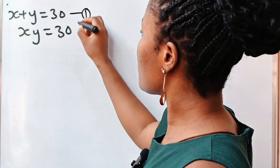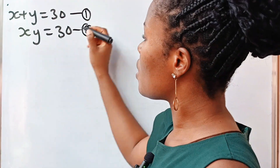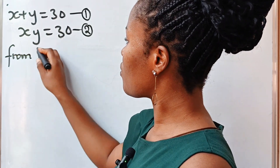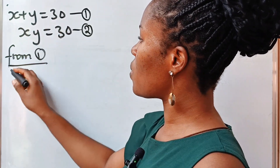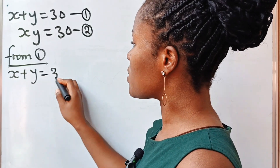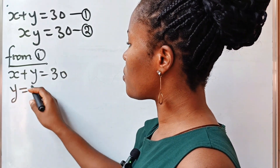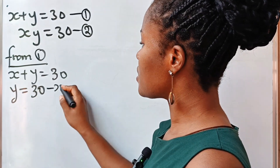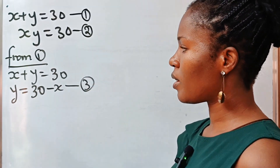So let's call this equation 1 and this equation 2. From equation 1, we have x plus y is equal to 30. So if we make y the subject of the formula, it's going to be 30 minus x. Now let's call this equation 3.